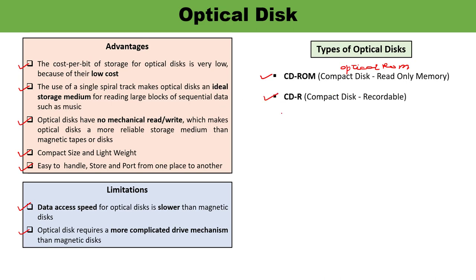Next is CD-R — Compact Disc Recordable — which is a WORM (Write Once Read Many) type of optical disc memory. The disc is blank when supplied. You can write data to it just once, and once written, the data cannot be changed. Written data can be read as many times as required but cannot be altered. CD-R discs are often used for making permanent backups of data, distributing software, and when only a small number of copies are required.